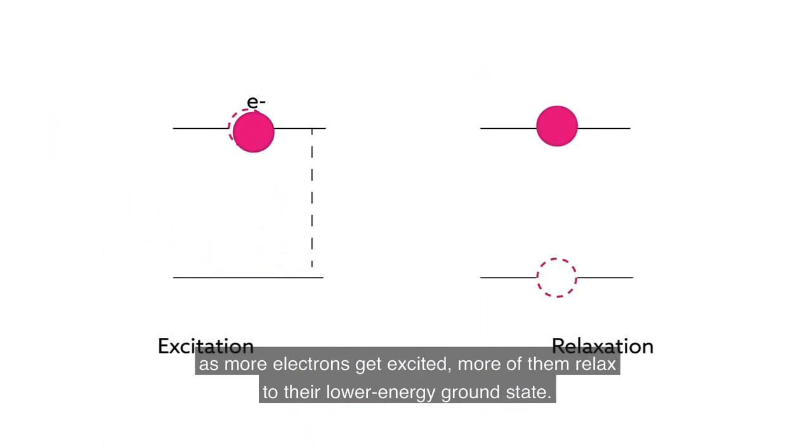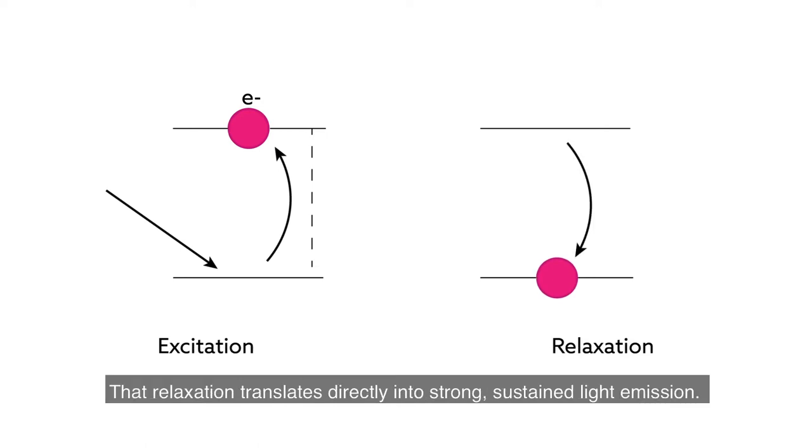As more electrons get excited, more of them relax to their lower energy ground state. That relaxation translates directly into strong, sustained light emission.